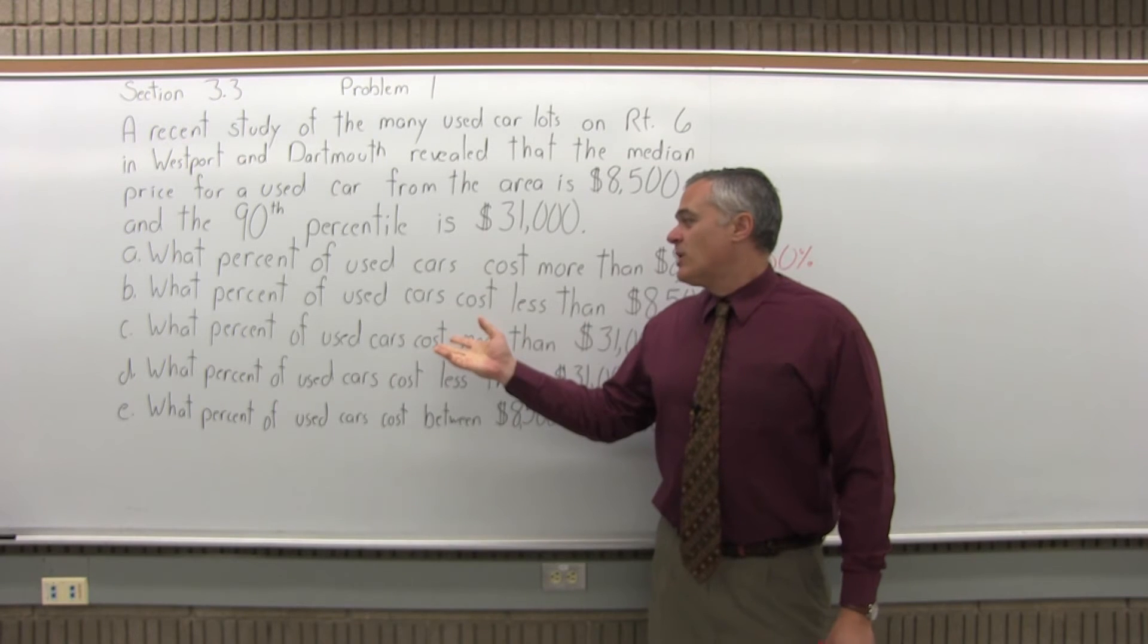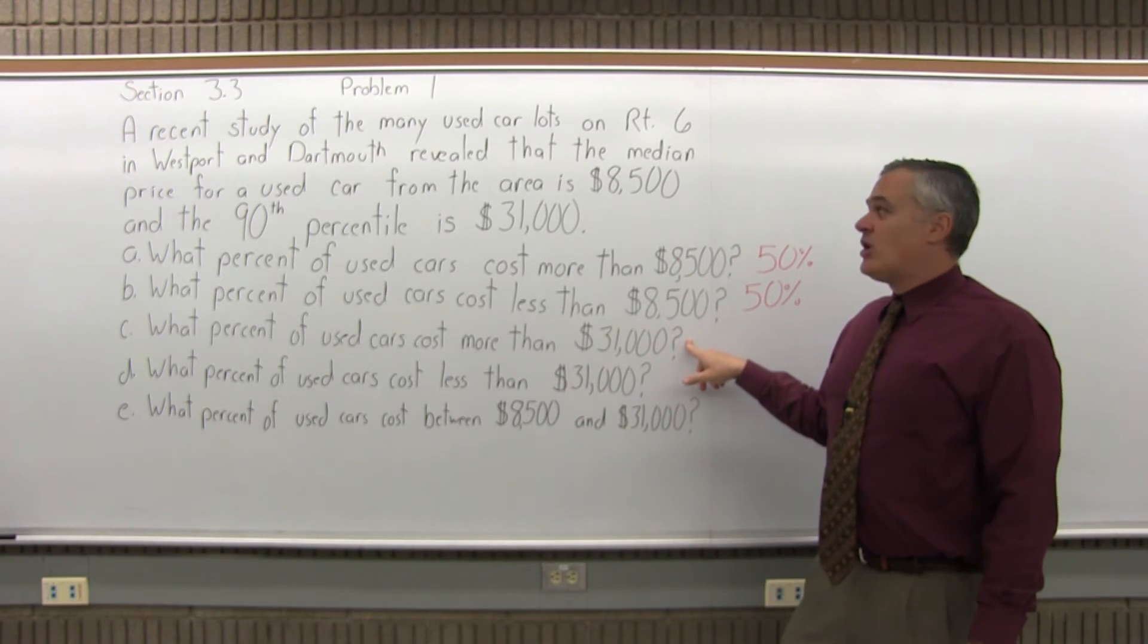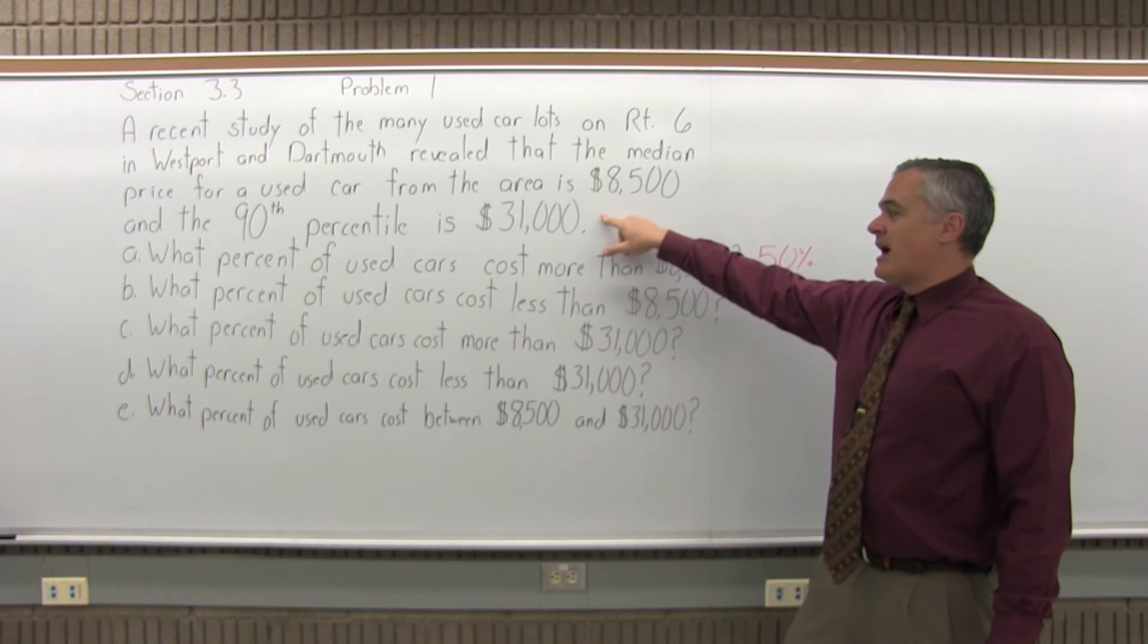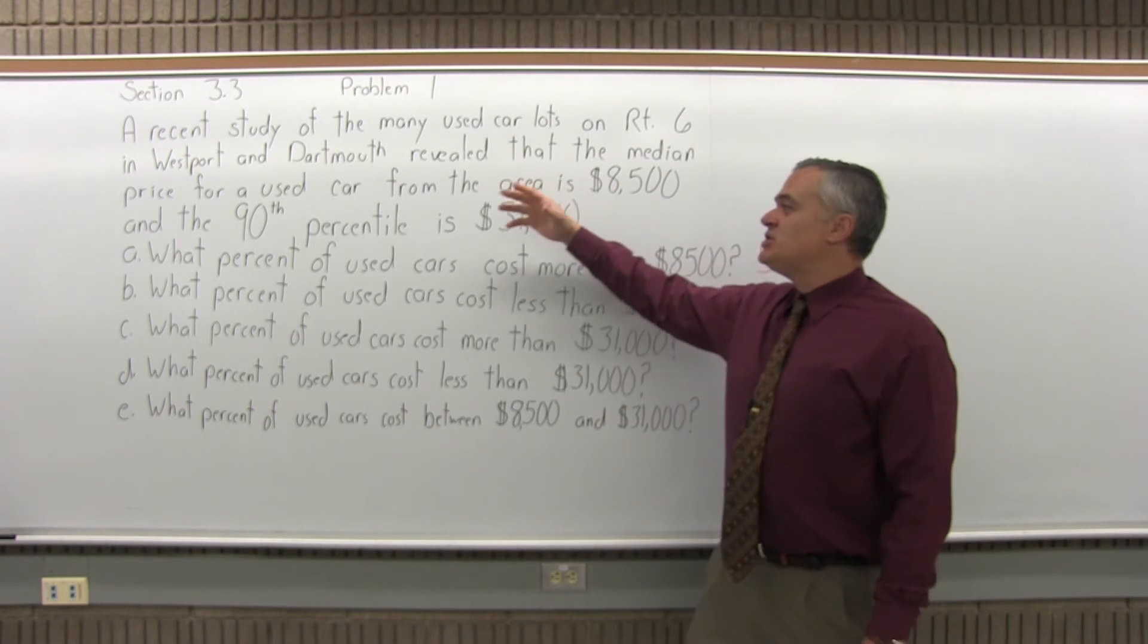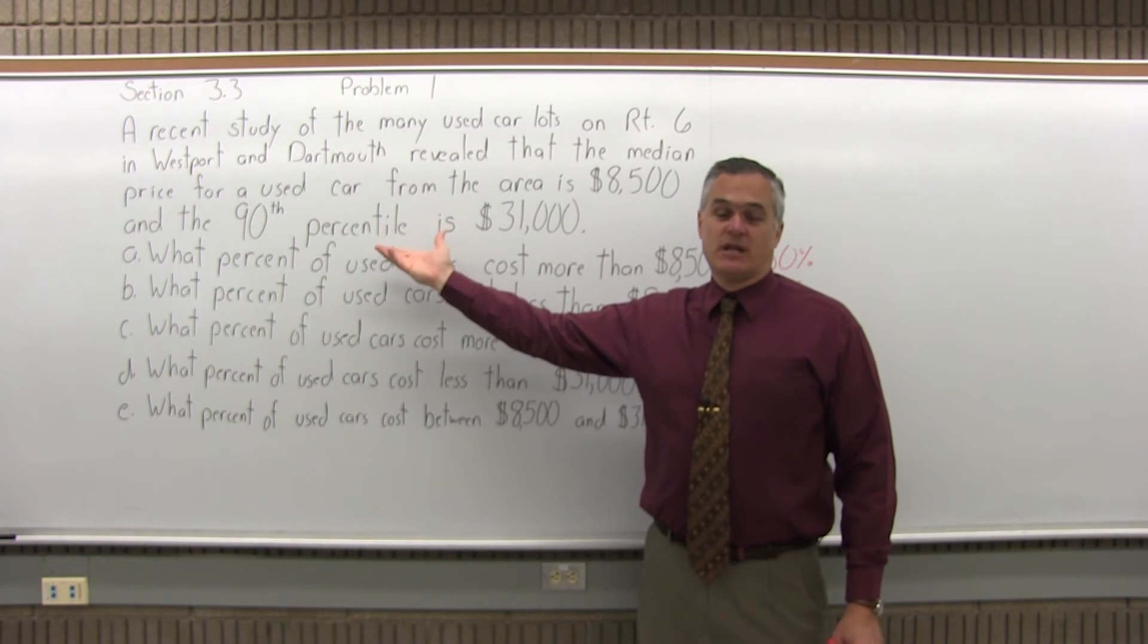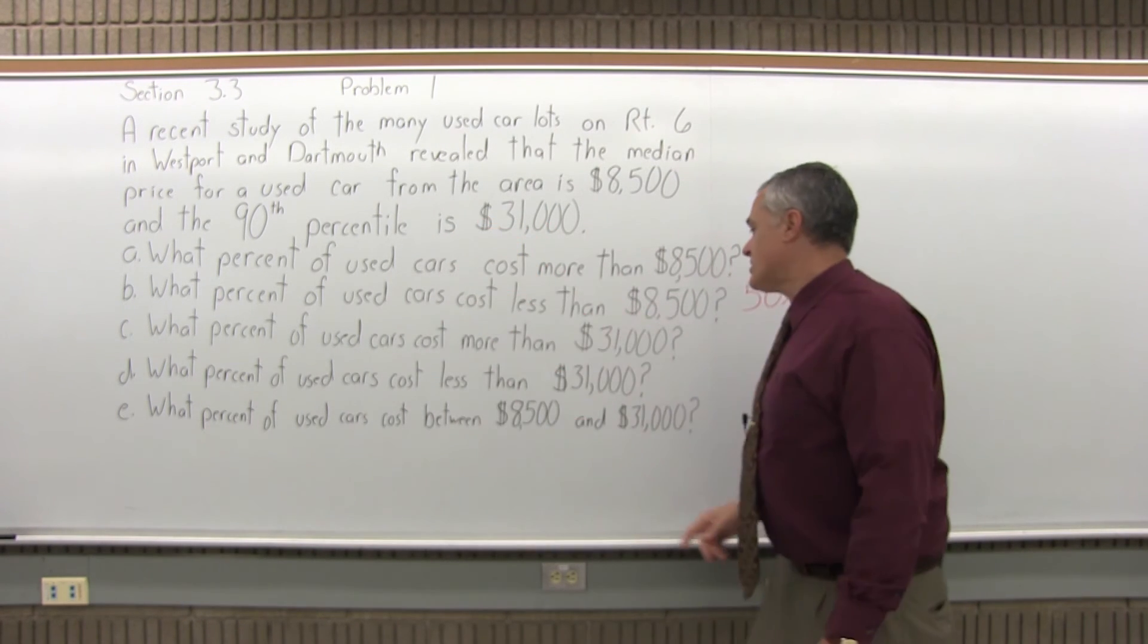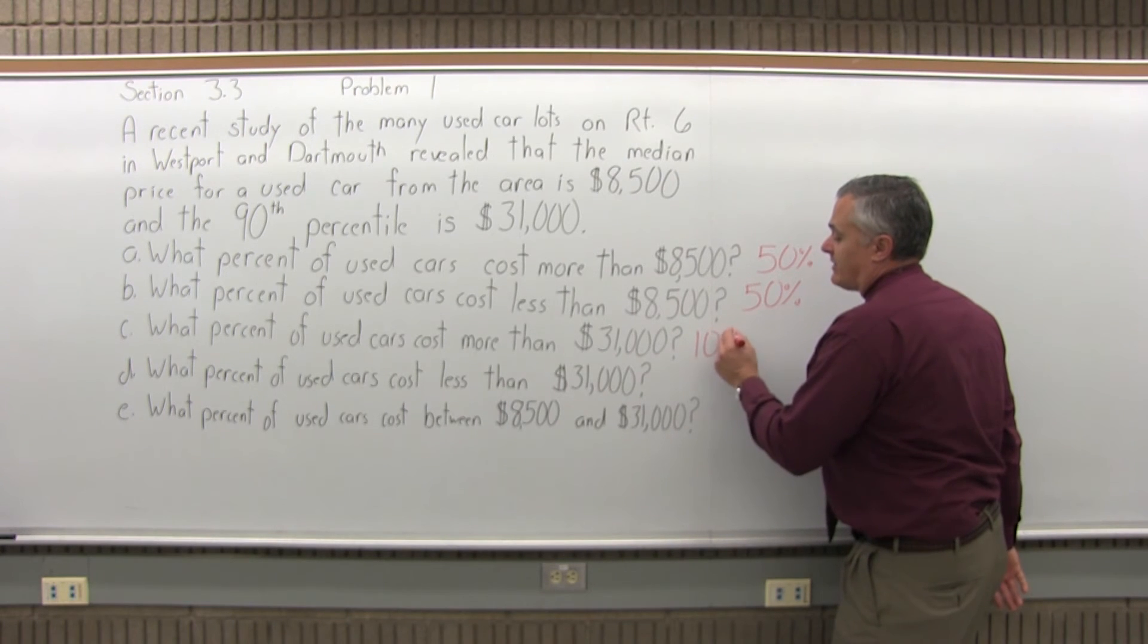Part C asks what percent of used cars cost more than $31,000. The question explains that that's the 90th percentile, $31,000. So 90 percent of the cars will be cheaper than $31,000, that's what 90th percentile means, and that leaves 10 percent that would cost more. So 10 percent of the used cars in the area cost more than $31,000.